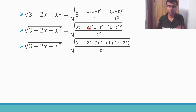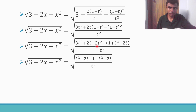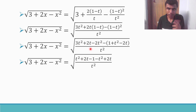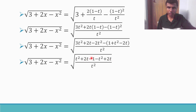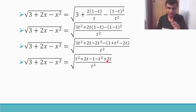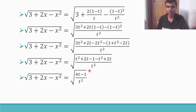Expanding: 2t(1 minus t) gives 2t minus 2t². Expanding minus (1 minus t)² gives minus 1 minus t² plus 2t, i.e., minus 1 minus t² plus 2t. Collecting terms: 3t² minus 2t² minus t² cancel to give zero for t² terms; 2t plus 2t gives 4t; and there is minus 1. So the numerator simplifies to 4t minus 1.